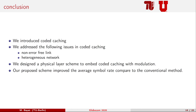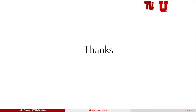In summary, we introduced the coded caching scheme and addressed the following issues: non-error-free links and heterogeneous networks. We designed a physical layer scheme to embed coded caching with modulation. Our proposed scheme improves the average symbol error rate compared to conventional schemes. One extension of this work is to introduce coded symbol error rate instead of uncoded symbol error rate. Thanks a lot for your attention.